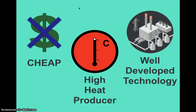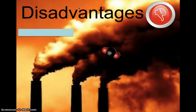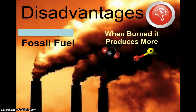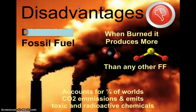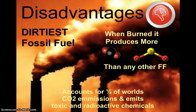The main disadvantage of coal is that it is extremely dirty — it's considered the dirtiest fossil fuel. When comparing coal to petroleum, natural gas, and nuclear energy, coal produces more carbon dioxide and sulfur oxides than any other fossil fuel, more than petroleum and more than natural gas.